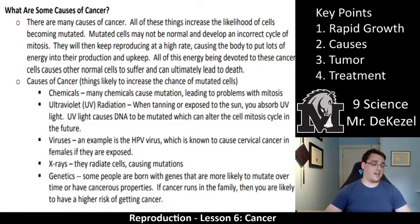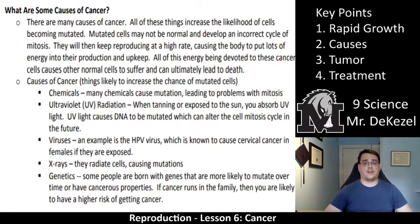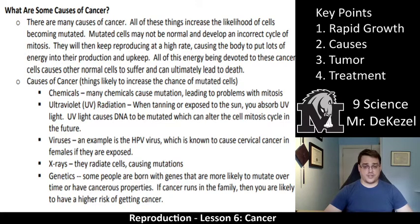So what are some causes of cancer? There are many many causes. Some of them may be genetic, some may have to do with exposures — if you've smoked or been exposed to radiation. What essentially happens is cells and DNA become mutated. Mutated cells may not be normal, and they develop an incorrect cycle of mitosis to reproduce at a high rate, potentially causing cancer and a tumor. Things like chemicals can cause mutations.